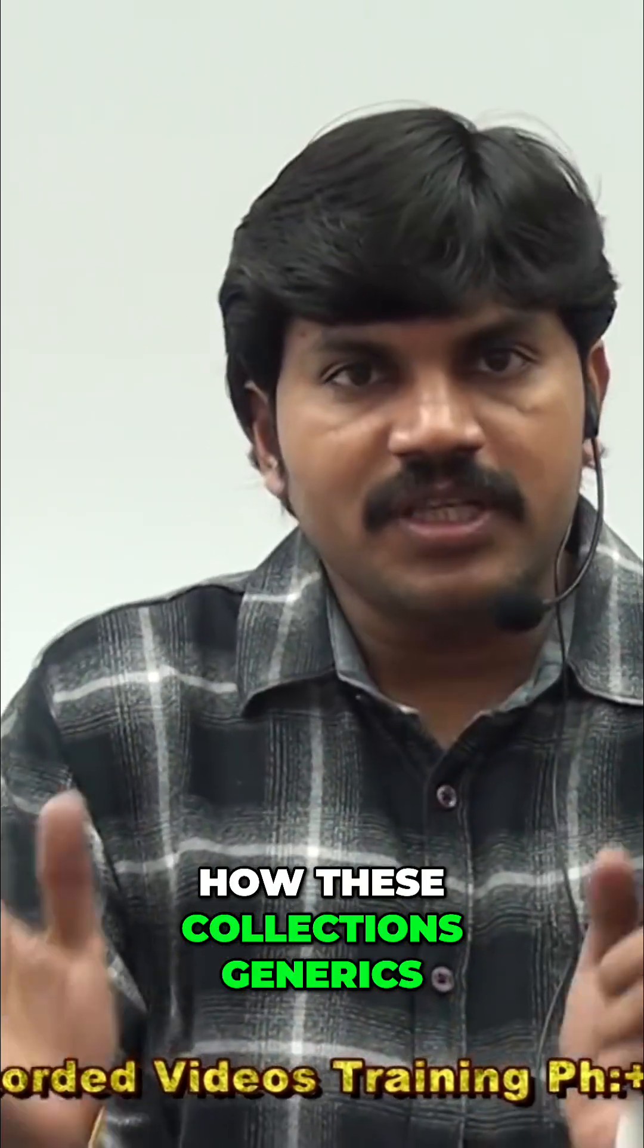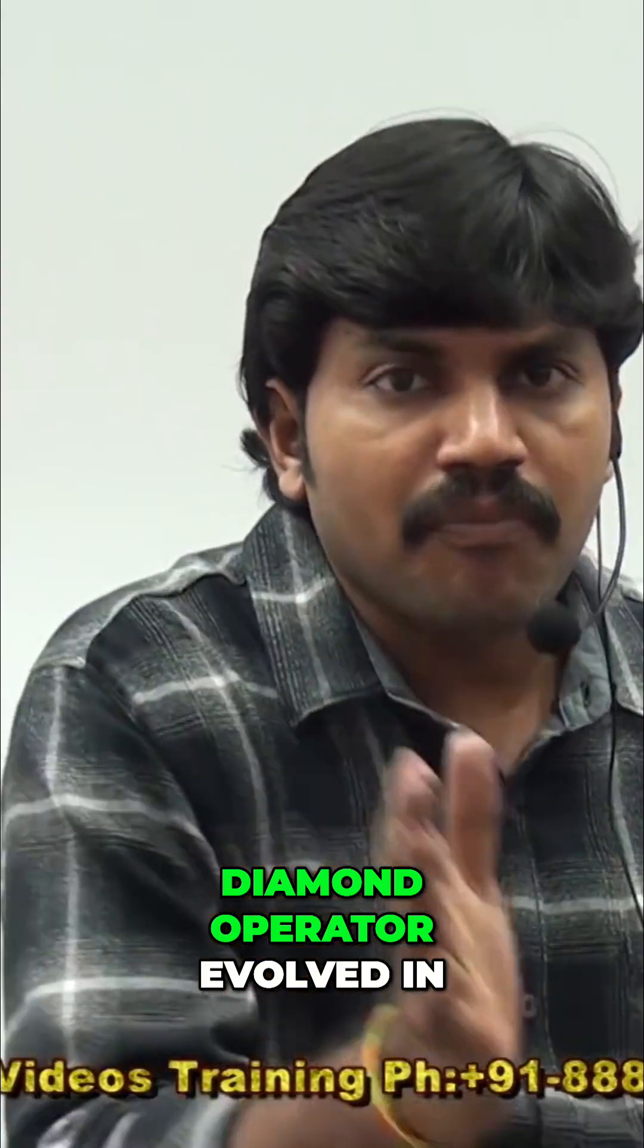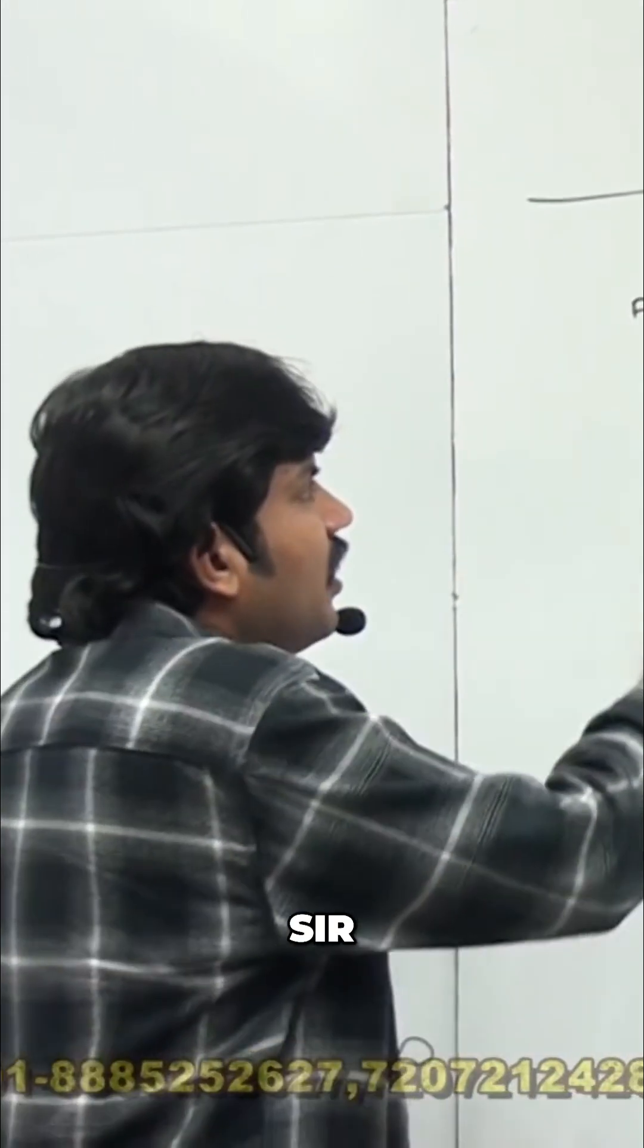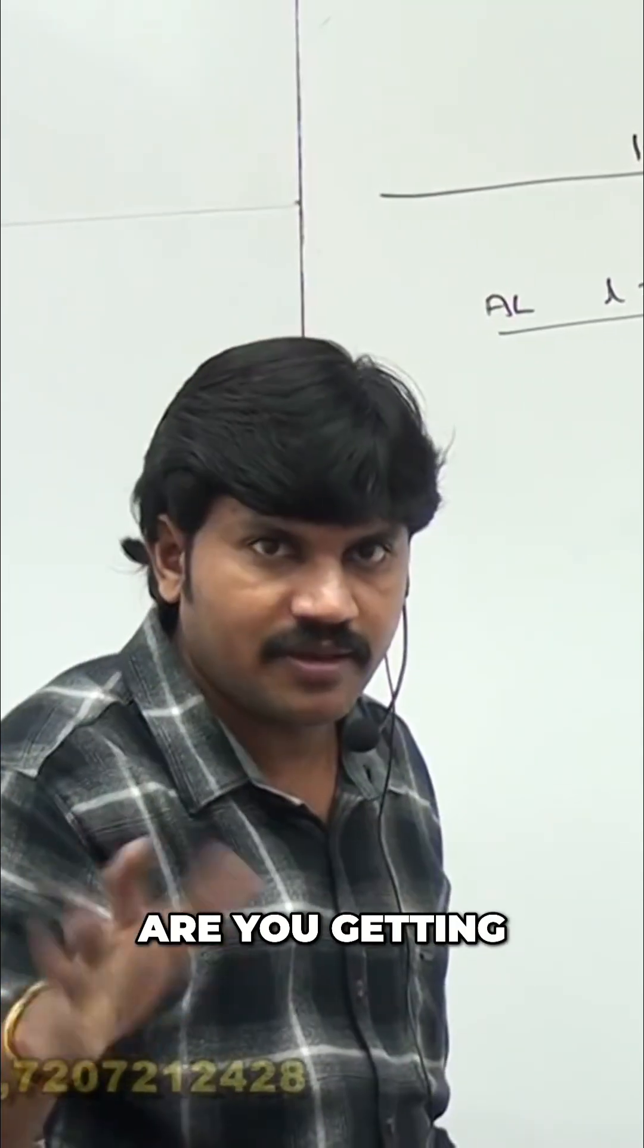Now I will explain how these collections generics diamond operator evolved in multiple versions. What is the problem with this? For this ArrayList we can add any type of object, that's why type safety is not there.